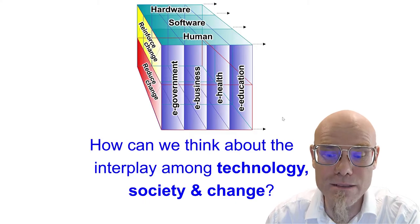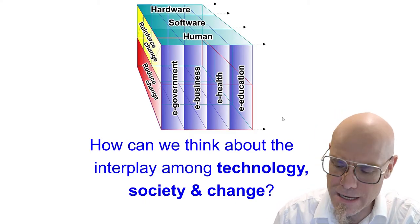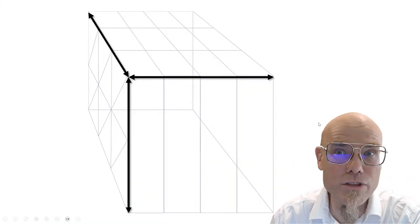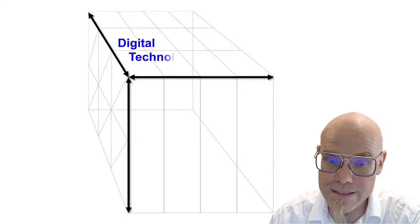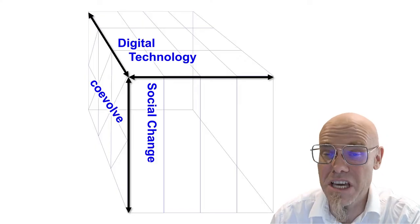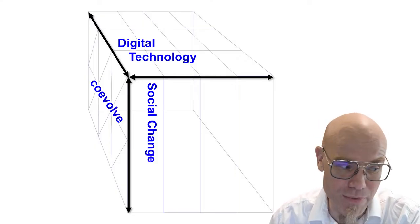How can we think about the interplay among technology, society, and change? In these explorations, we will use a three-dimensional framework, basically saying that technology and social change co-evolve. And these are the three dimensions.